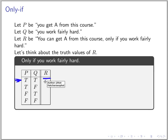In the second case, P is true — you get an A — but Q is false — you do not work hard. Since I said you can get an A only if you work fairly hard, this case is inconsistent, so R is false here.